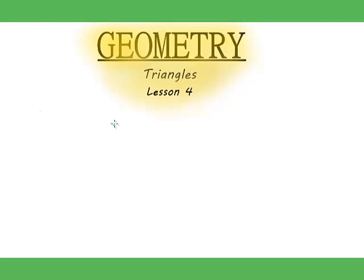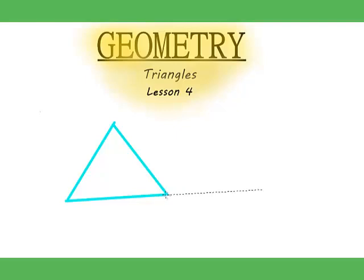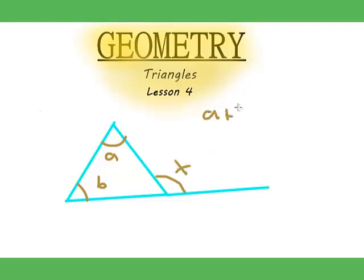So, as you might remember from the last lesson, there's a triangle, and if there's a line extended out from the triangle — the rule states that if this is a, and this is b, then if this is x, then a plus b equals x. So we're trying to prove that.